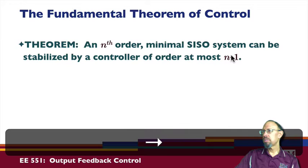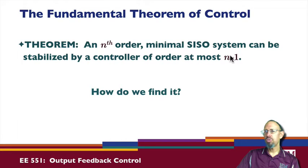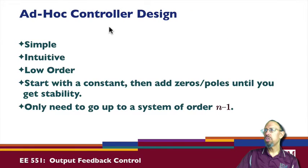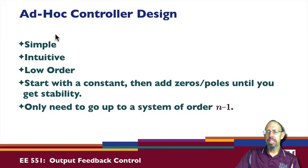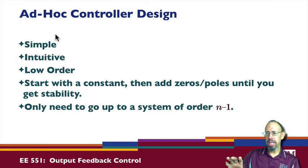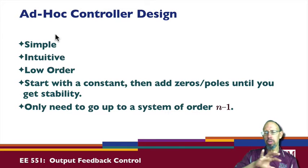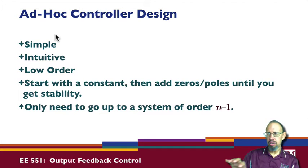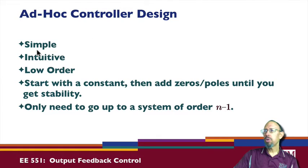An important question is: how can we find such a controller? Well, we can use ad hoc controller design. In the root locus problem, you add poles and zeros to try to stabilize the system. The zeros attract poles, so if you want to attract poles from the right half plane into the left half plane, you would put the zeros so that the poles would migrate into the left half plane. This approach is fairly simple for many problems and very intuitive.